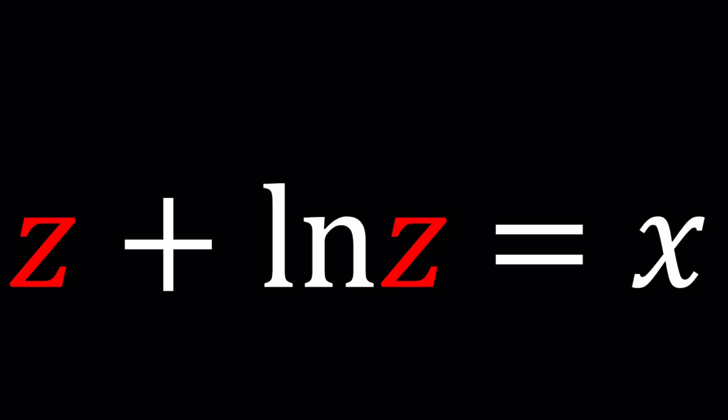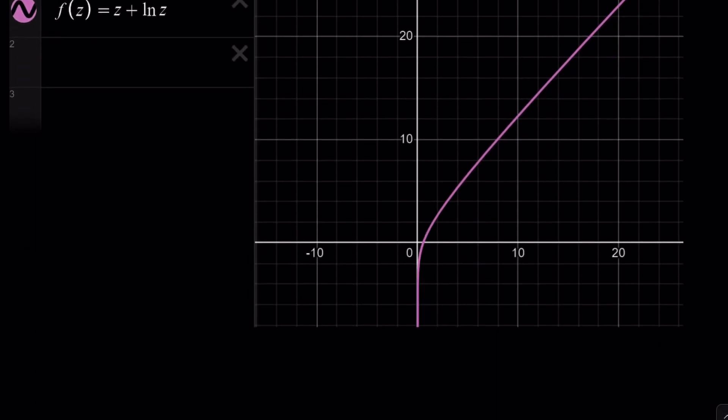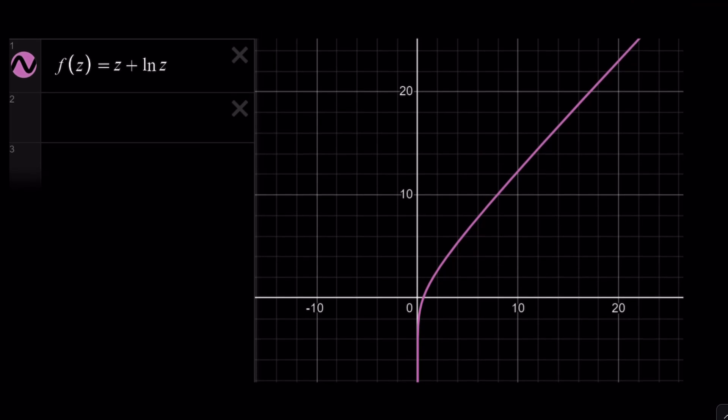Is there always going to be a solution? That's a good question. So suppose I set z plus ln z equal to 0. Would there be a solution? Or if I set equal to a negative value? In other words, can z plus ln z take every value, every real value from negative infinity to positive infinity? That's going to be a good question, right? And that'll be answered by this graph.